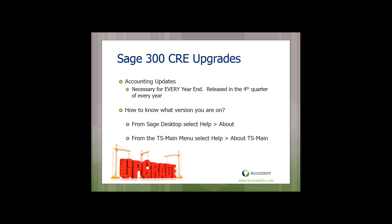With the upgrade you get all the latest accounting updates. Every fourth quarter there's a year-end release that handles custom forms for government reporting like 1099s and W-2s, as well as tax table calculations and changes in how taxes are calculated. A recent example in payroll was the Affordable Care Act — the ability to track that in the software.